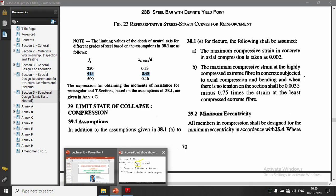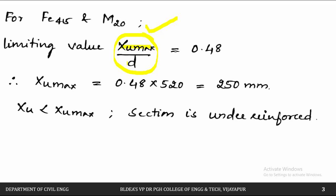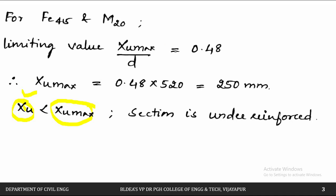Using XU max / D = 0.48, we calculate XU max = 0.48 × 520 = 250 mm. Since XU = 234 mm is less than XU max = 250 mm, the section is under-reinforced. If they were equal it would be a balanced section; if XU were greater, it would be over-reinforced.